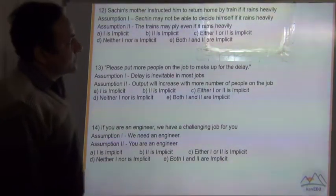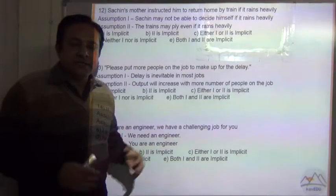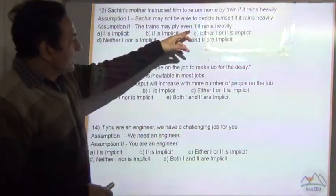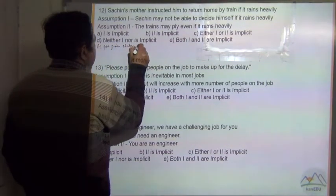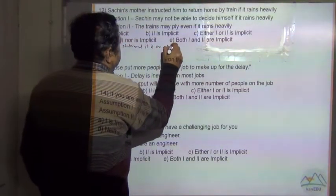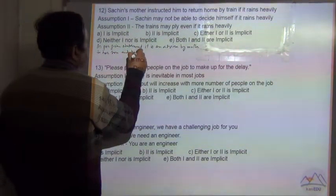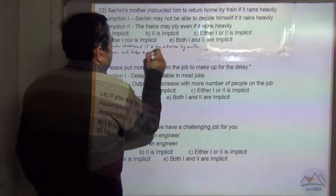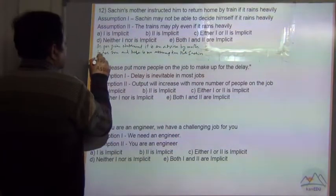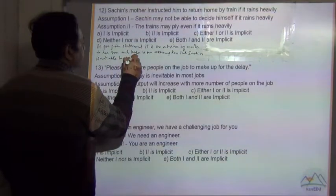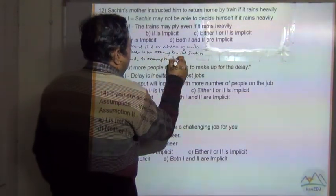Assumption 1: Sachin may not be able to decide himself if it rains heavily. As per the given statement, some mother is giving a suggestion. She is not doubting that Sachin will not be able to decide or he is not in a position to decide. So this assumption is not implicit.